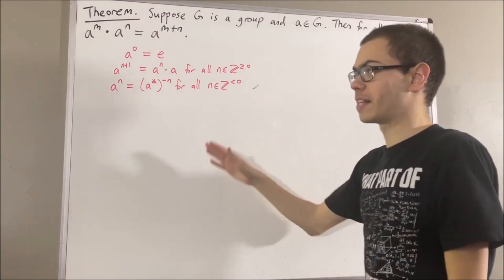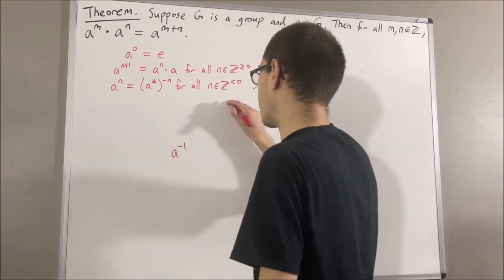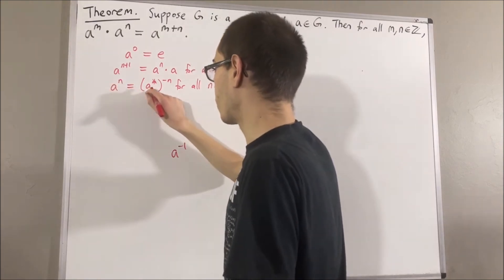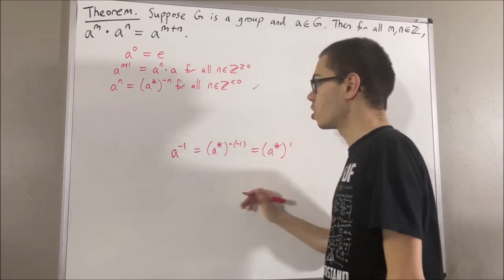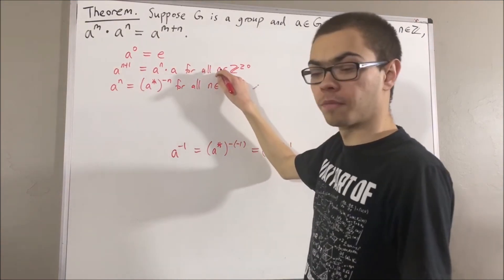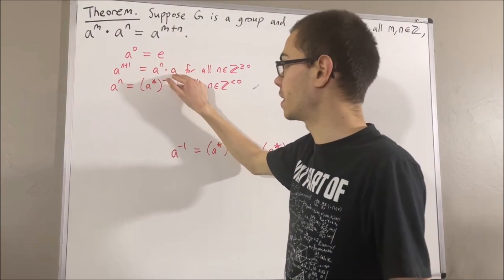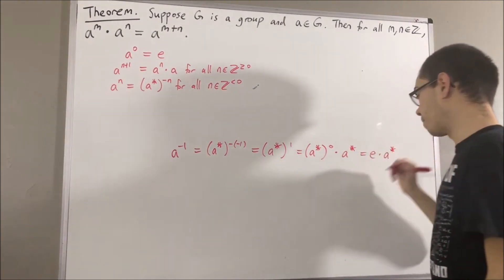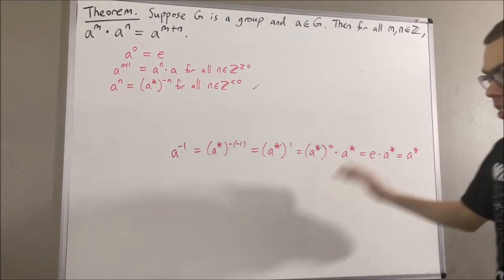But now let's verify that the inverse of A is in fact equal to A to the power of negative 1. By our definition of negative integer exponents, if we replace N with negative 1, then A to the power of negative 1 is equal to the inverse of A to the power of negative negative 1. And negative of negative 1 is equal to 1. Then, according to the recursive part of our definition, if we replace A with the inverse of A and replace N with 0, then the inverse of A to the power of 1 is equal to the inverse of A to the power of 0 times the inverse of A. Any group element to the power of 0 is equal to the identity, and by definition of the identity, this is just equal to the inverse of A.